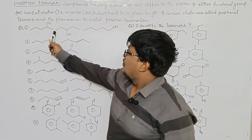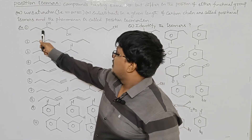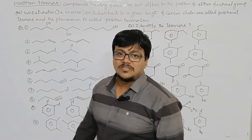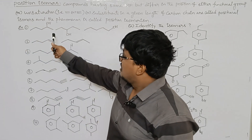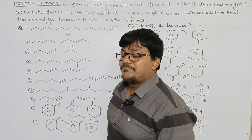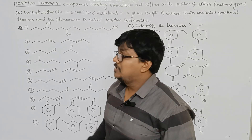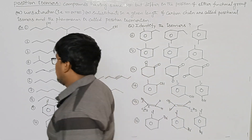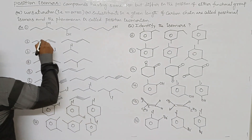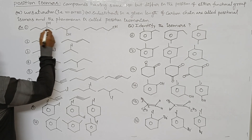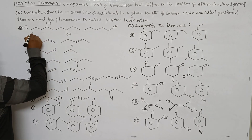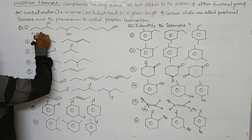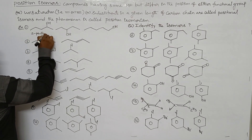The first example has 5 carbons present in the compound. It is named as pentanol. Here, alcohol is present in the second position, so it is 2-pentanol.